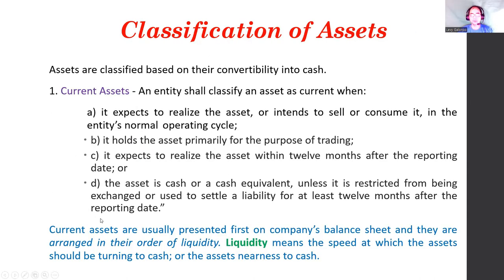Assets are classified based on their convertibility into cash. Current assets are assets expected to be realized, sold, or consumed in the entity's normal operating cycle. An asset is current when it is held primarily for trading, expected to be realized within 12 months after the reporting date, or is cash or cash equivalent — unless restricted from being exchanged or used to settle a liability for at least 12 months after the reporting date.